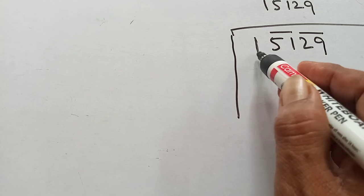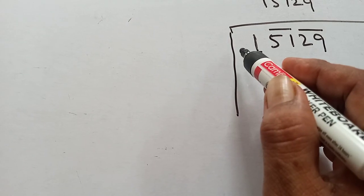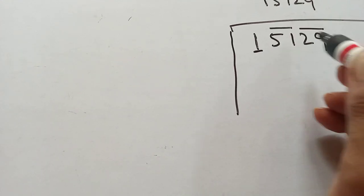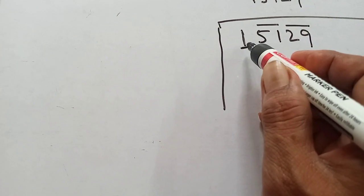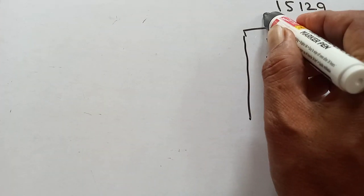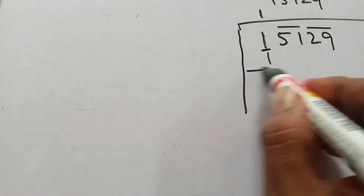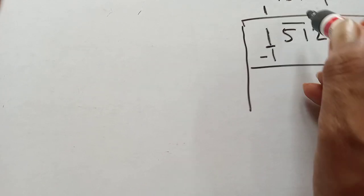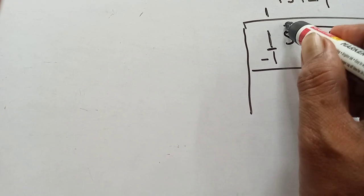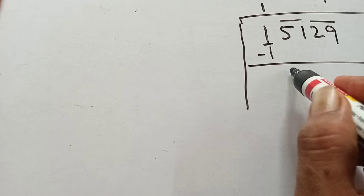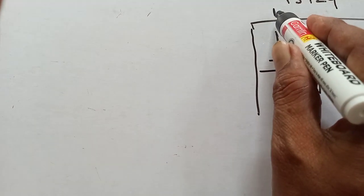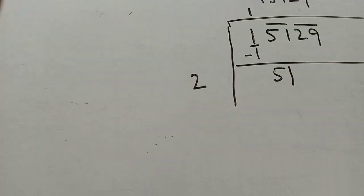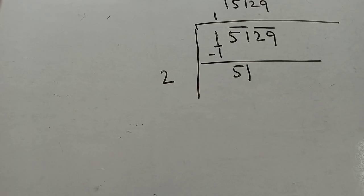How many times will 1 go into 1? One times one is one, two times two is four — that is more than one, so one times will go. Write 1, subtract: one minus one, cancel. Now bring down the next pair: 51. Double the quotient digit 1 to get 2.